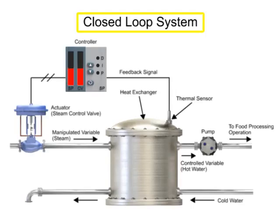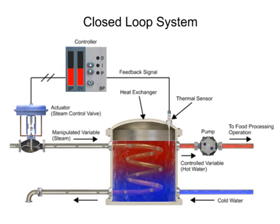The function of a closed-loop system is to monitor and automatically maintain a variable at a desired set point in a manufacturing process.